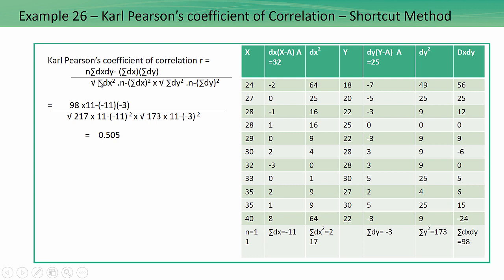The formula to be used is: R equals N times summation of DX·DY minus summation of DX times summation of DY, divided by the square root of [N times summation of DX squared minus (summation of DX) squared] multiplied by the square root of [N times summation of DY squared minus (summation of DY) squared]. Substituting the values, you will get the approximate value as 0.5, indicating a medium degree of positive correlation between X and Y.